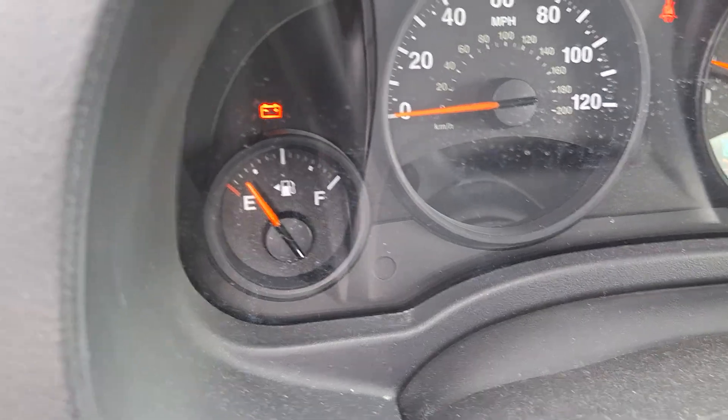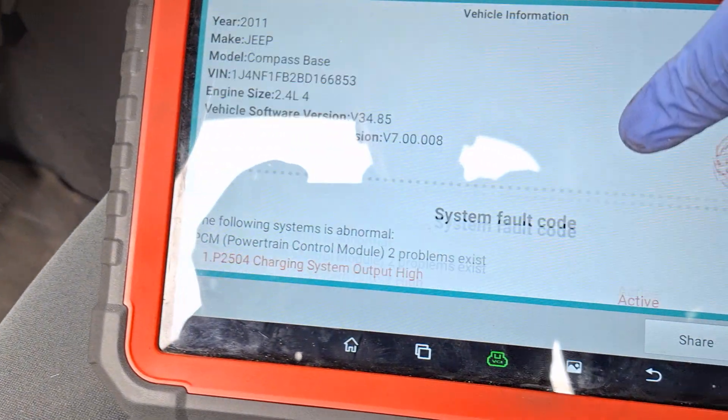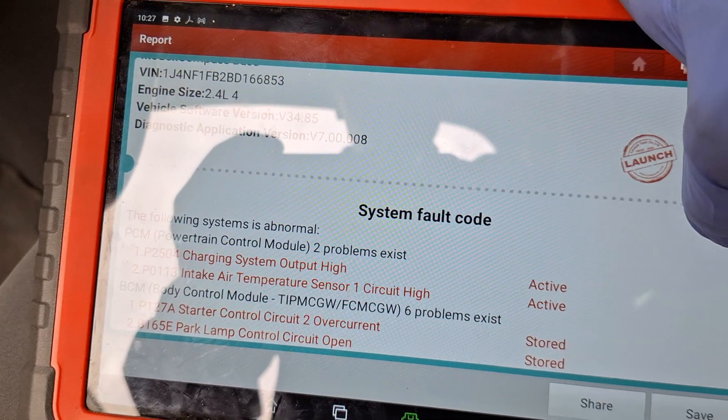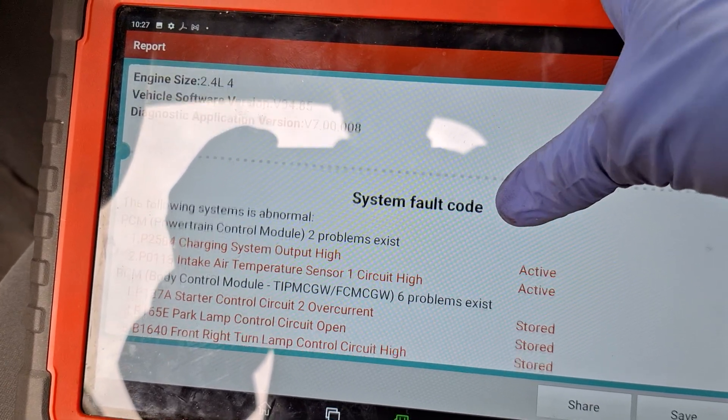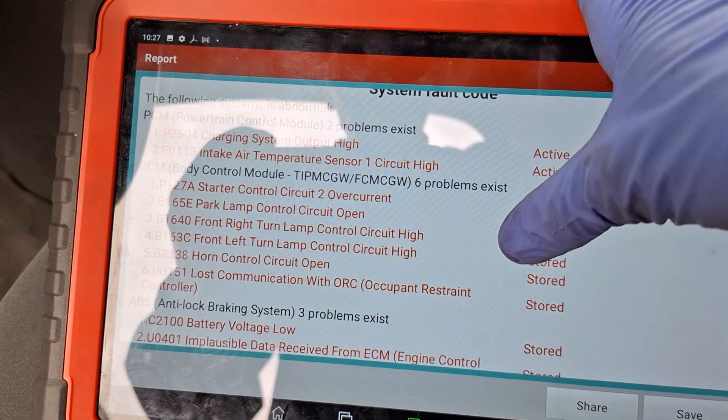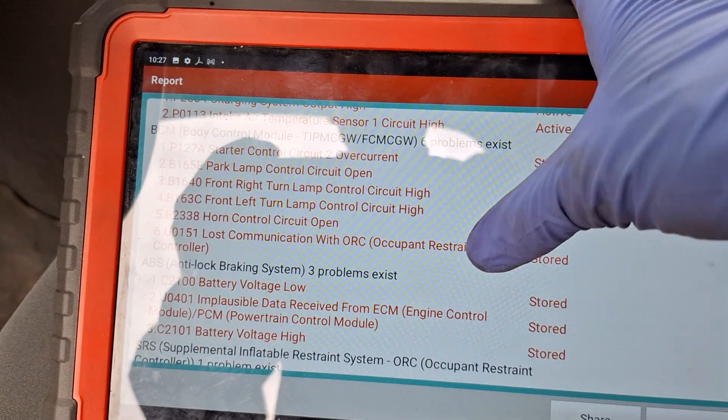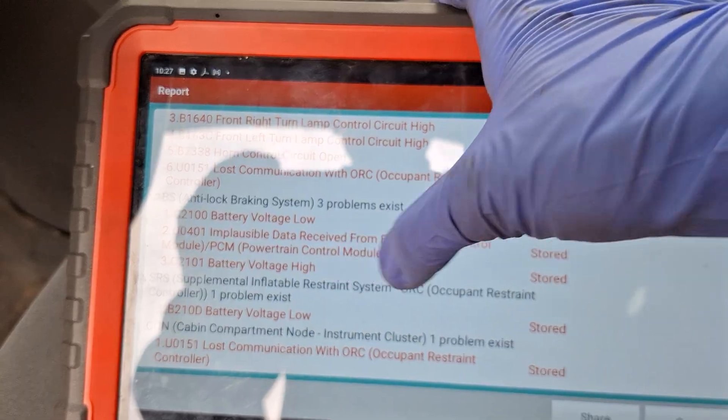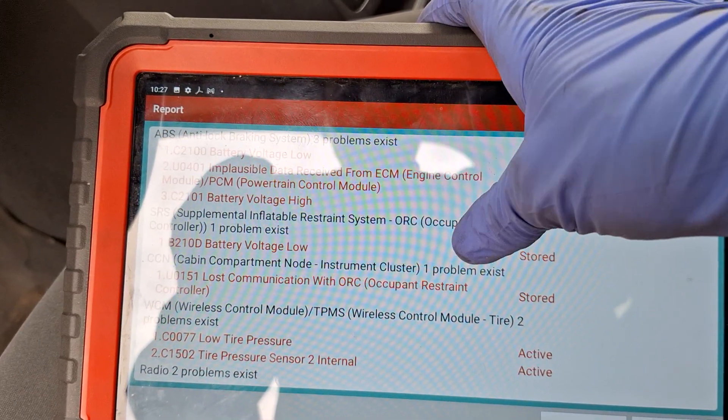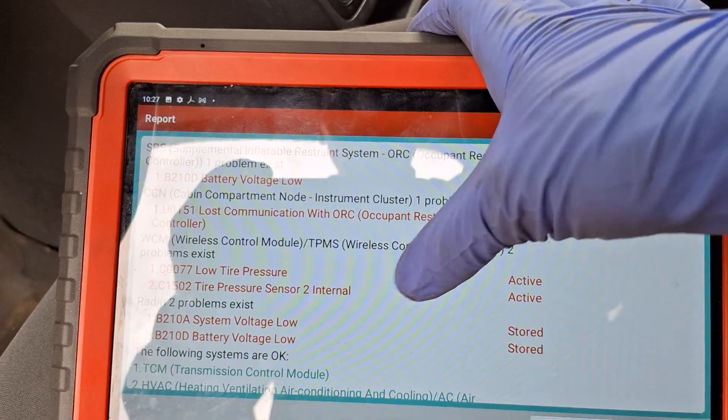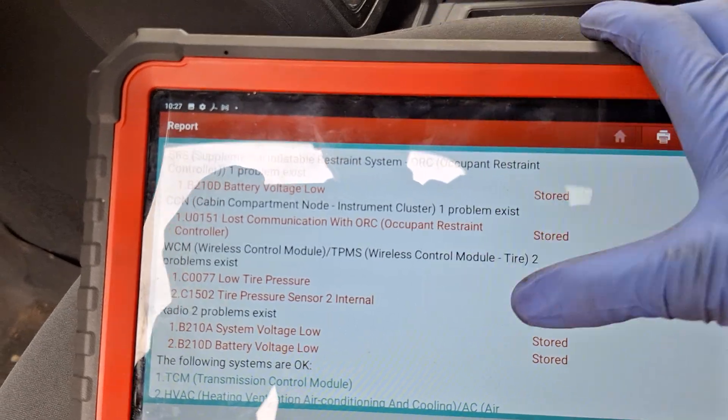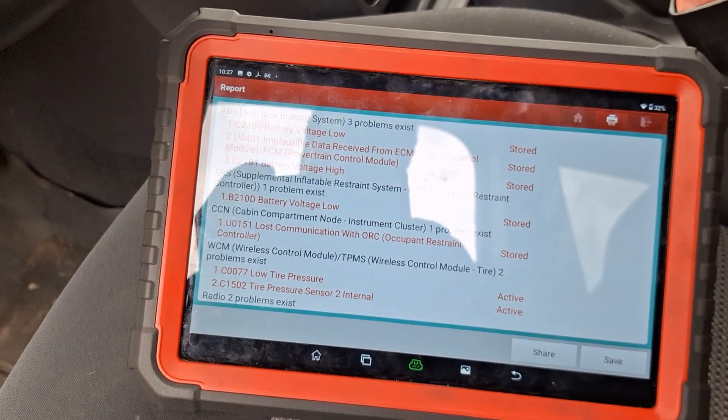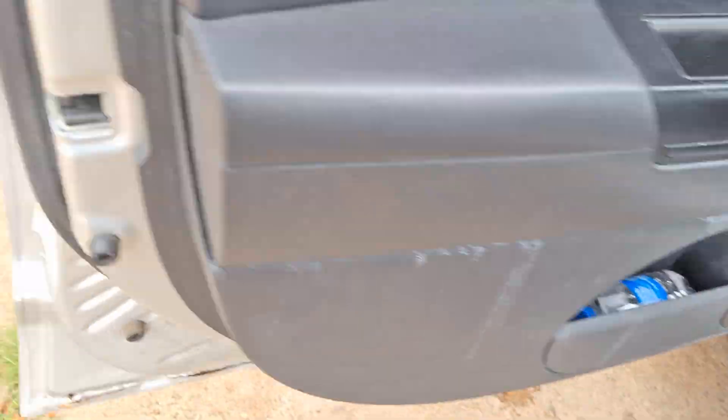So scan the vehicle for codes. Under PCM, talking about charging system output high. Let's go see ABS talking about low voltage. At the same time, some high voltage. SRS low voltage, and I believe radio control, yep, radio control saying low voltage. So these are the codes we got so far.